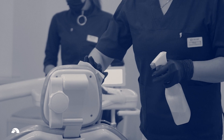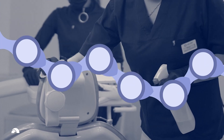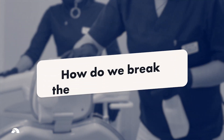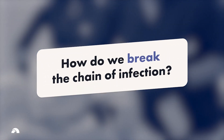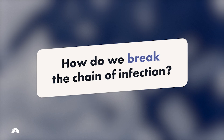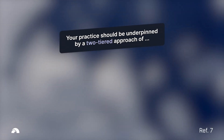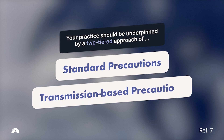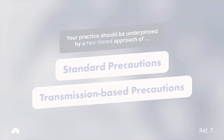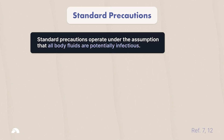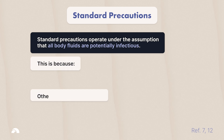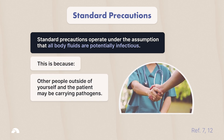Preventing the spread of infection requires you to break the chain of infection. But how can this be achieved? Your practice should be underpinned by a two-tiered approach of standard and transmission-based precautions. Standard precautions operate under the assumption that all bodily fluids are potentially infectious. This is because other people outside of yourself and the patient may be carrying pathogens.